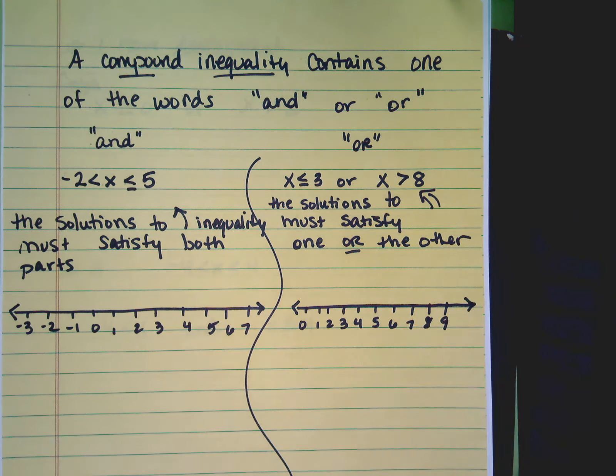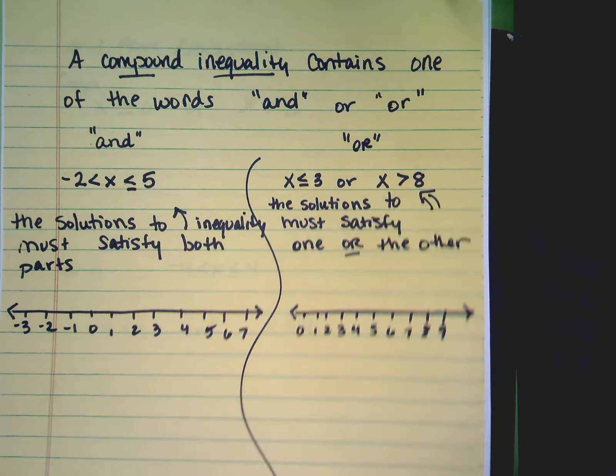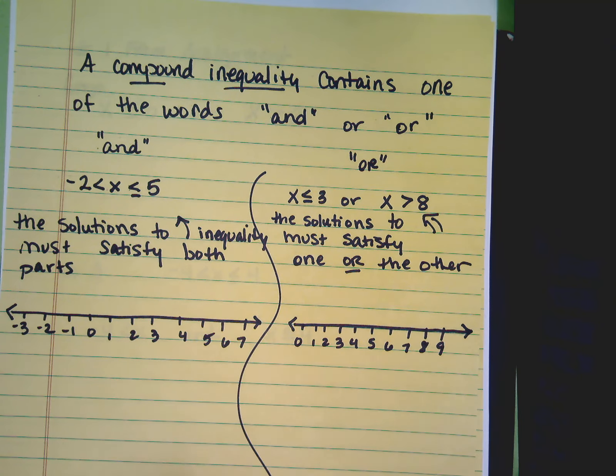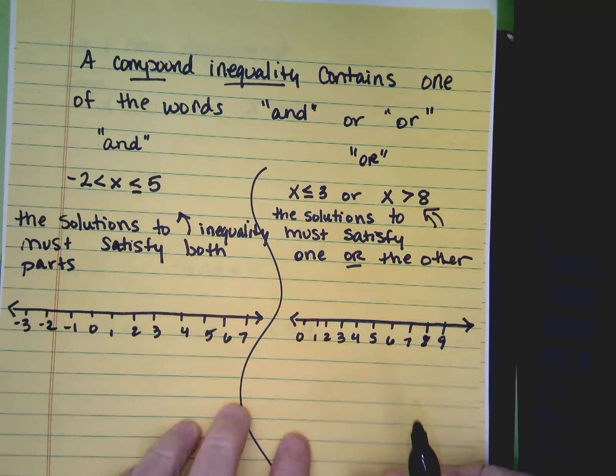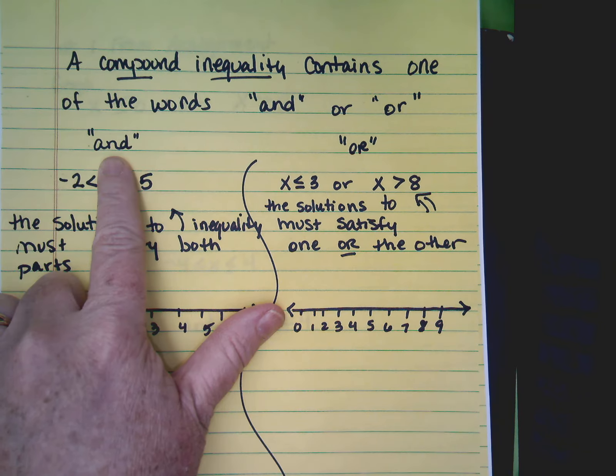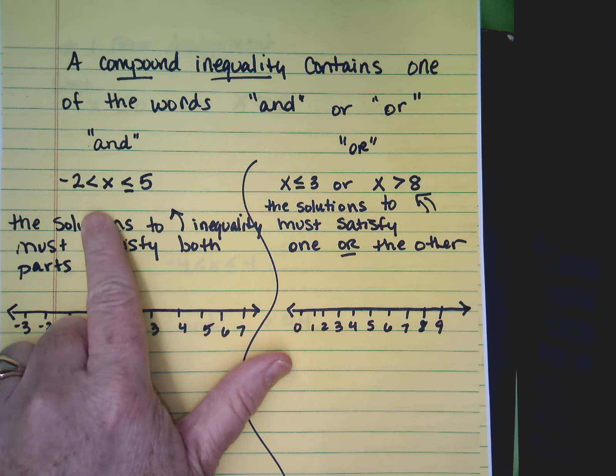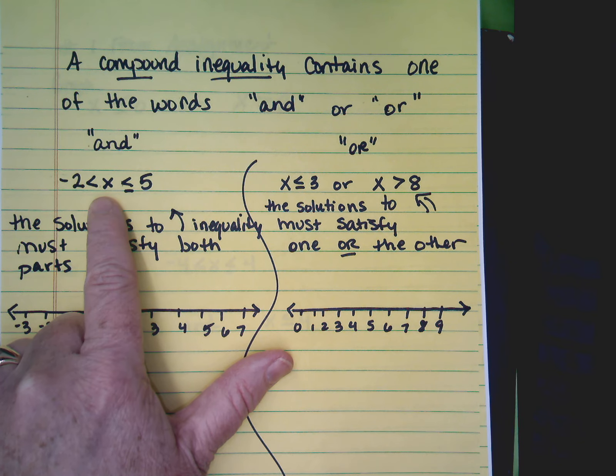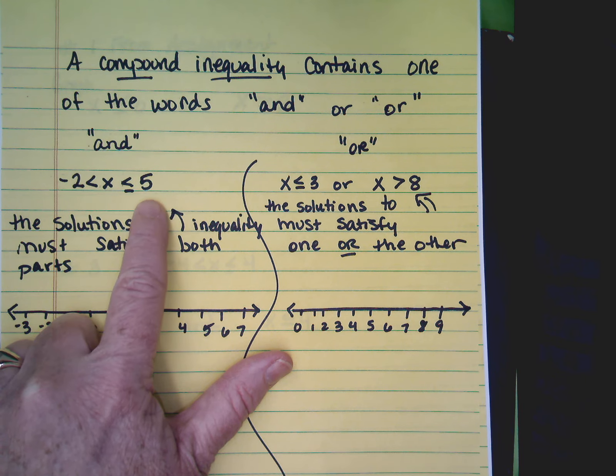A compound inequality contains one of the words and or or. If it's an and inequality, you might see it written this way: negative 2 is less than x and x is less than or equal to 5.